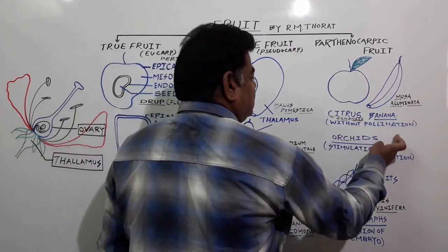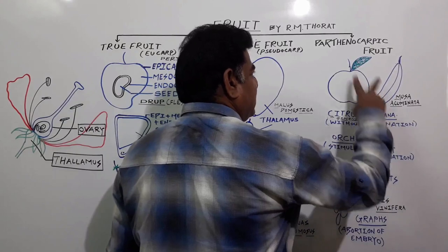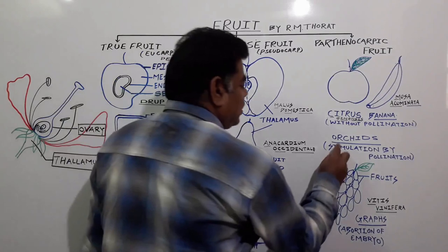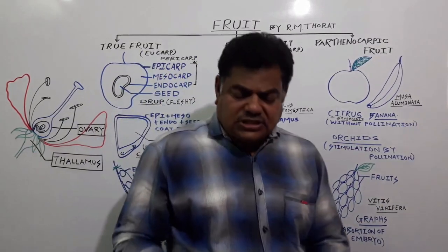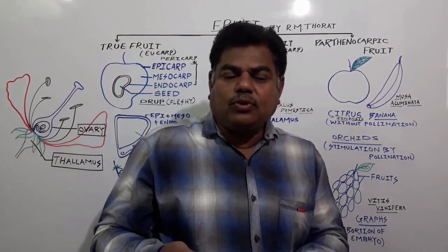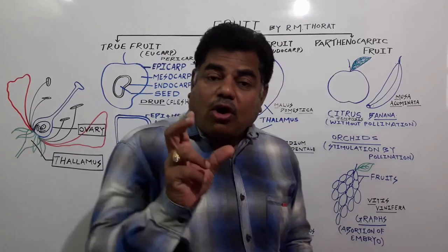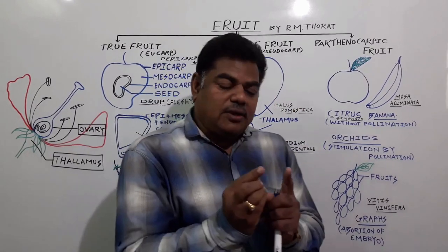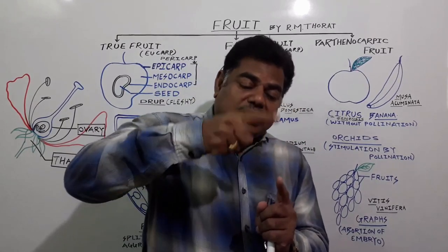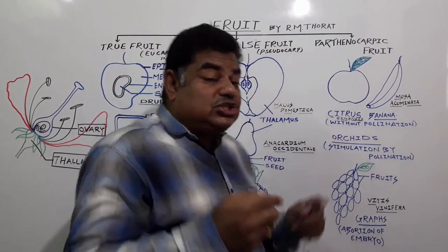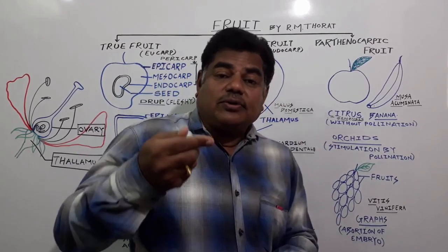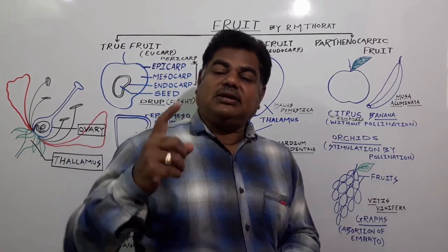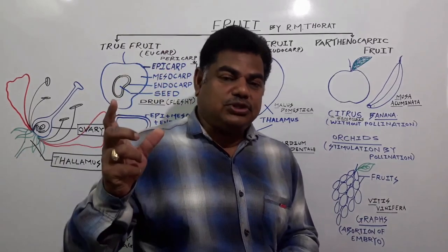Without the act of pollination and fertilization, if fruit formation takes place, that fruit is called a parthenocarpic fruit. In some cases, for example orchids, fruit formation takes place due to stimulation of pollination. Pollination takes place, and due to that stimulation — just the pollen grains being transferred from the anther to the receptive stigma — the ovary ripens without fertilization.